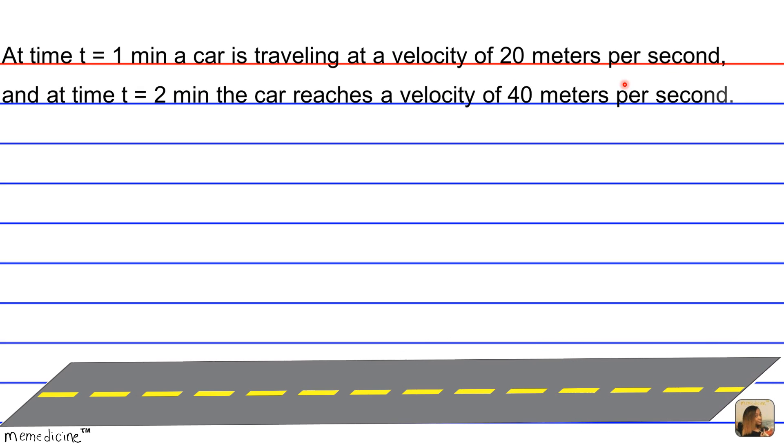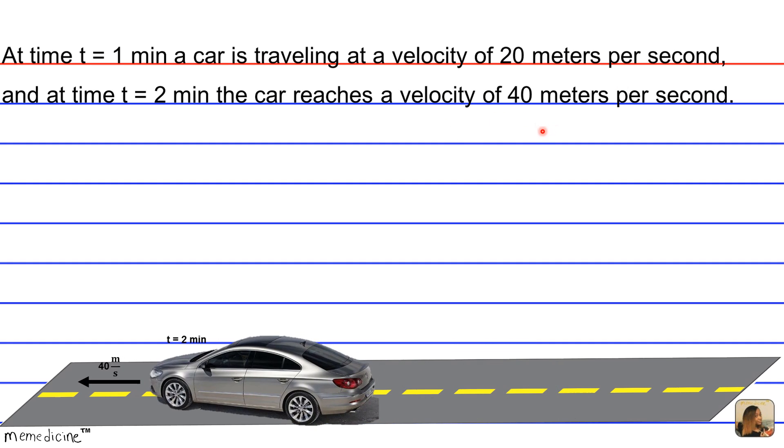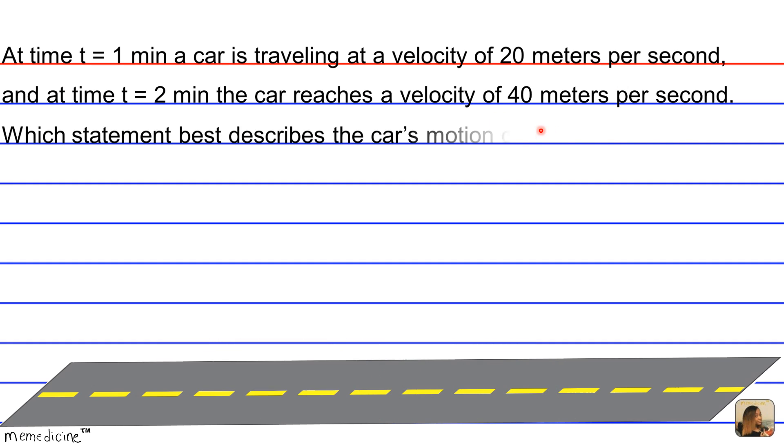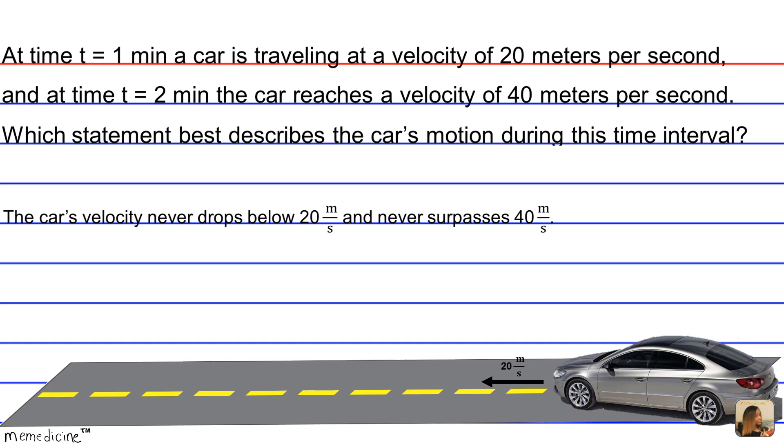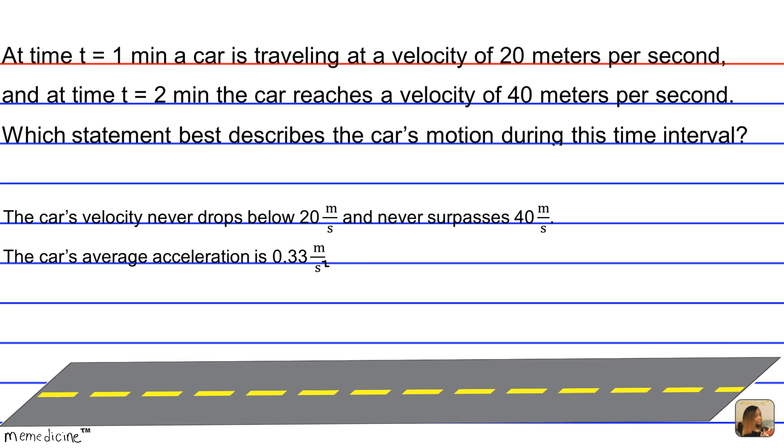At time t equals two minutes, the car reaches a velocity of 40 meters per second. Which statement best describes the car's motion during this time interval? Is it A: the car's velocity never drops beneath 20 meters per second and never surpasses 40 meters per second? Is it B: the car's average acceleration is 0.33 meters per second squared?